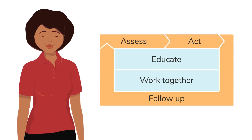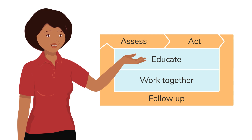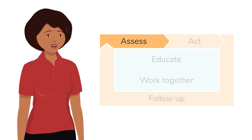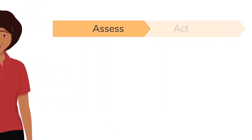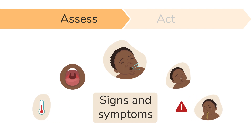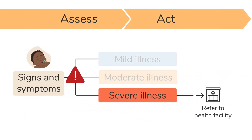As a community health worker, you can help change this by making sure you do these tasks when you care for a sick child. Start by assessing the child and asking the caregiver questions to identify signs and symptoms of illnesses, especially danger signs, as early as possible. A danger sign tells you that the child is very sick and needs to be referred urgently to a health facility.